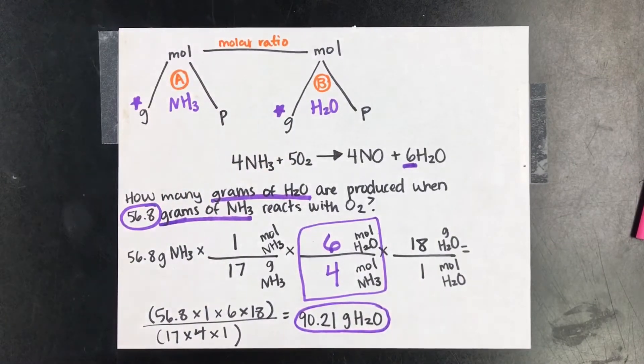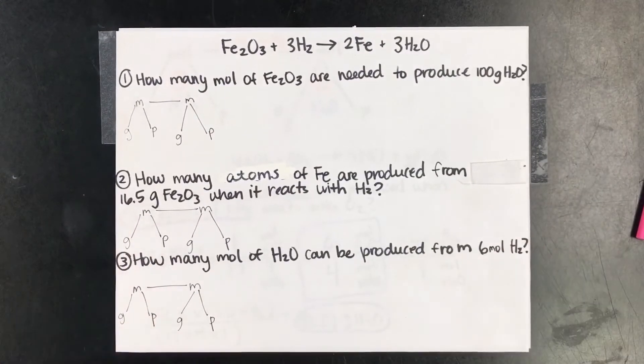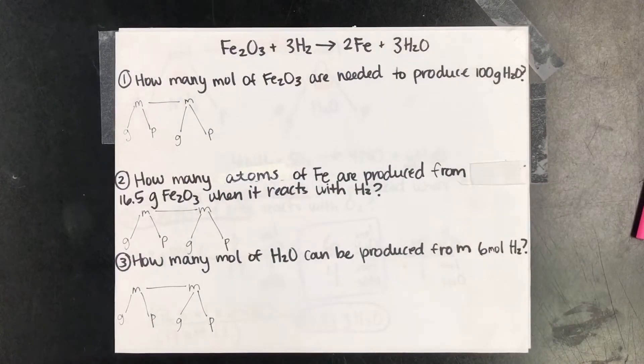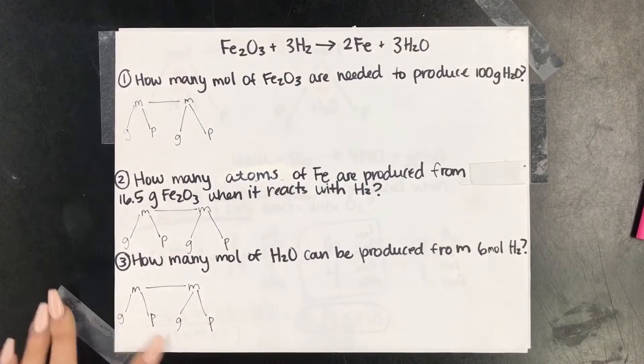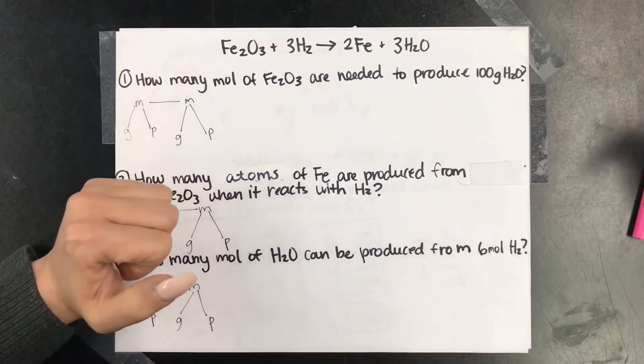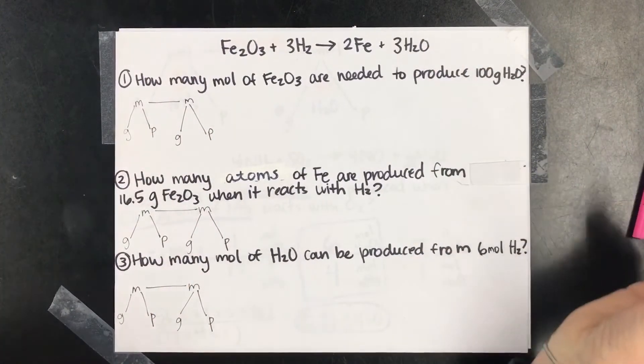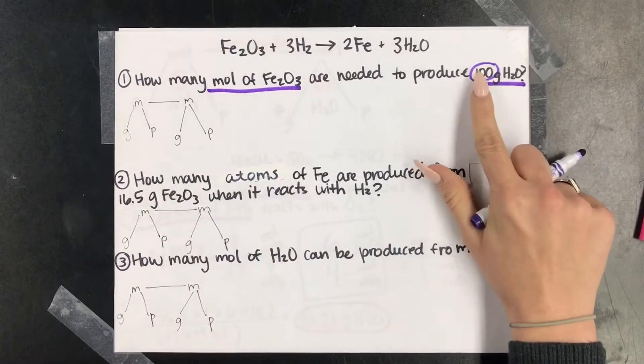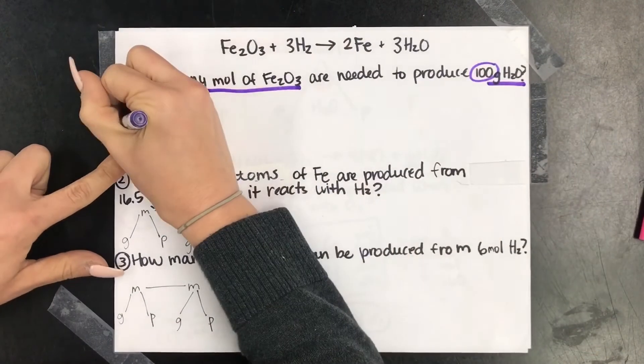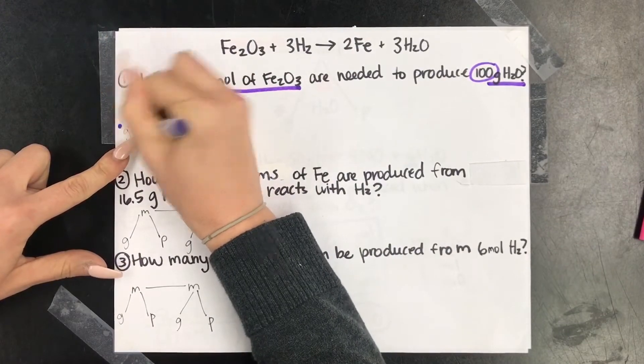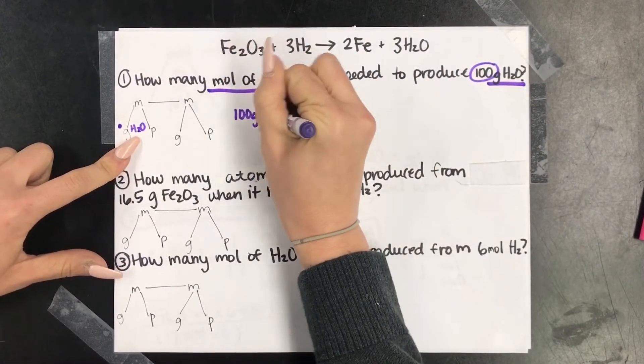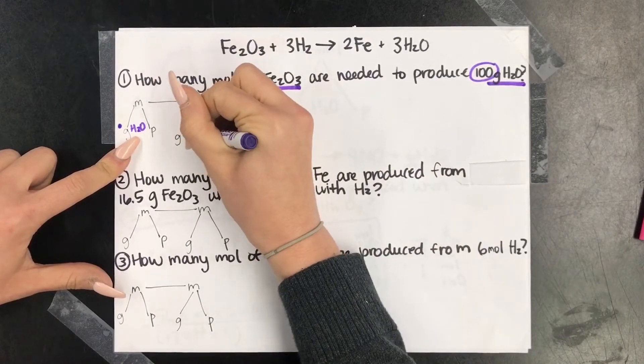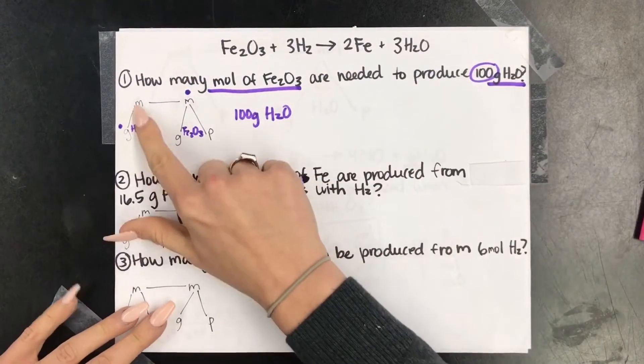Okay, so let's look at some more problems. For these, we're going to use the same reaction for all three problems. So first step, annotate. So we have 100 grams of H2O and then we're looking for moles of this. So we know that we always start with the number and the unit attached to it. So we are starting at grams H2O and we are going towards mole of Fe2O3. So this would be one, two steps.